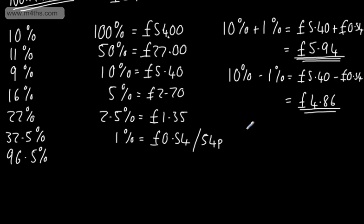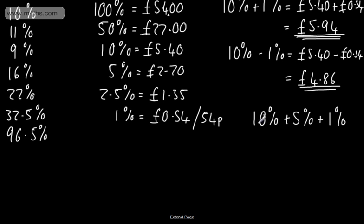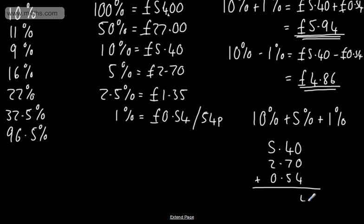For 16%, I can build it as 10% + 5% + 1%. Alternatively, you could do 20% minus four lots of 1%. Using column addition: £5.40 + £2.70 + £0.54 gives £8.64. So 16% of £54 is £8.64.